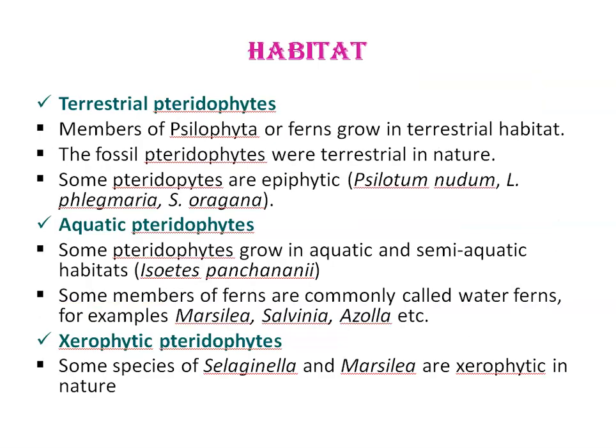Regarding habitat: Pteridophytes are the first land-based vascular plants. They are mostly terrestrial in nature and grow in cool and shady places, but some Pteridophytes inhabit xerophytic conditions, and some live in semi-aquatic and aquatic conditions. Members of Pterophyta or ferns grow in terrestrial habitat. Fossil Pteridophytes were also terrestrial in nature. Some Pteridophytes are epiphytic — for example Psilotum nudum and a few ferns grow as epiphytes. Tall, well-stratified trees in forests provide suitable habitat for epiphytic Pteridophytes.